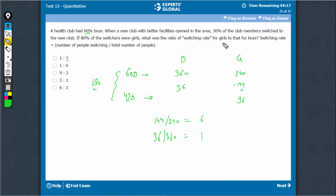The switching rate for girls to that of boys is 0.6 upon 0.1. The order is very important in such questions. If the order was boys to girls, the answer would have been 1 to 6. Currently, it is girls to boys, so this is 6 to 1. Option E.